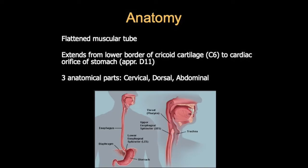Before we start the barium swallow, you need to know a little about the anatomy of the esophagus, which is a flattened muscular tube extending from the lower border of the cricoid cartilage at C6 up to the cardiac orifice of the stomach at D11. There are three anatomical parts: cervical, dorsal, and abdominal. The barium swallow is a study of the esophagus from the oral cavity to the stomach.